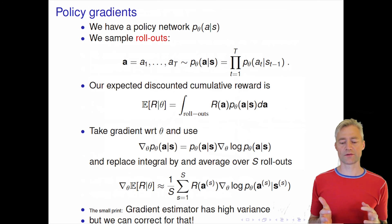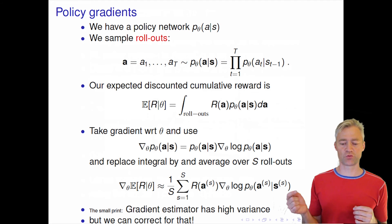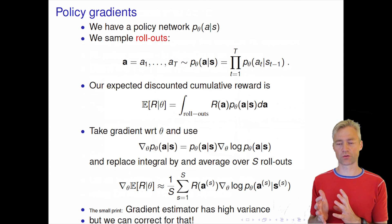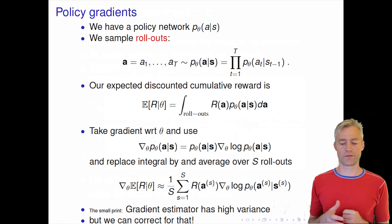There's a small caveat with this equation. It's pretty easy to show that this gradient estimator has a very high variance. But luckily we can actually correct for this because we can show that we can actually subtract a function in the gradient estimator, and then we can use this arbitrary function to minimize the variance of our estimate. And this helps us on stability.